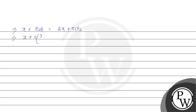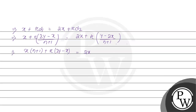Substituting d1 and d2: x plus r·(2y minus x) divided by (n plus 1) equals 2x plus r·(y minus 2x) divided by (n plus 1). Multiplying through by (n plus 1): x(n plus 1) plus r(2y minus x) equals 2x(n plus 1) plus r(y minus 2x). Expanding: xn plus x plus 2ry minus rx equals 2xn plus 2x plus ry minus 2rx.